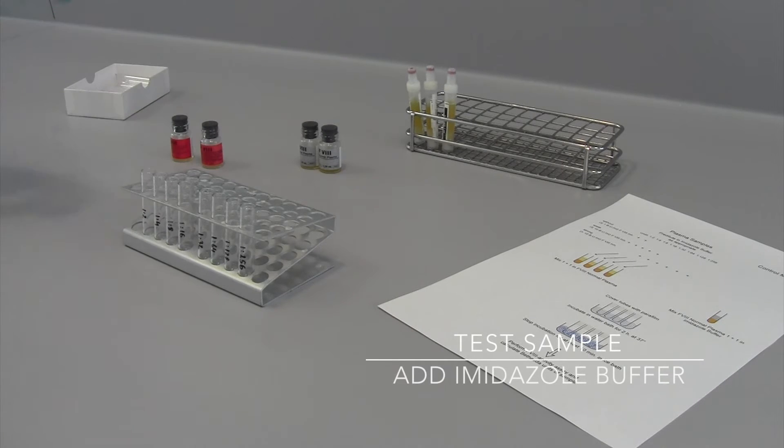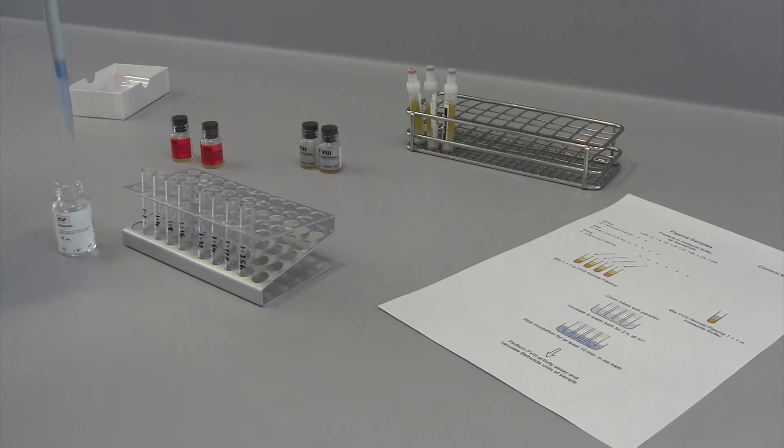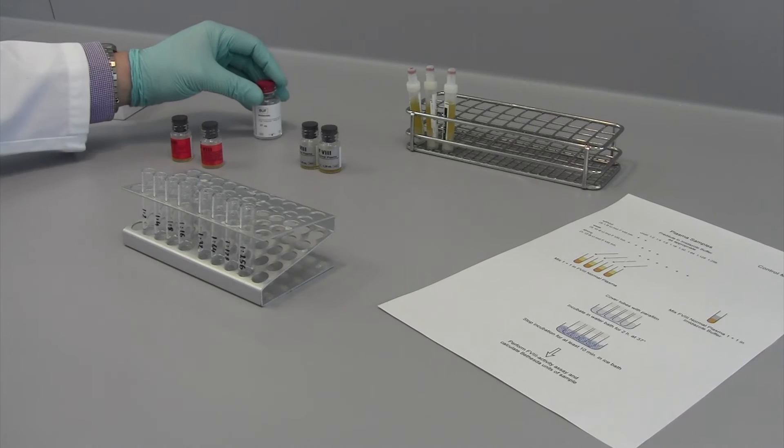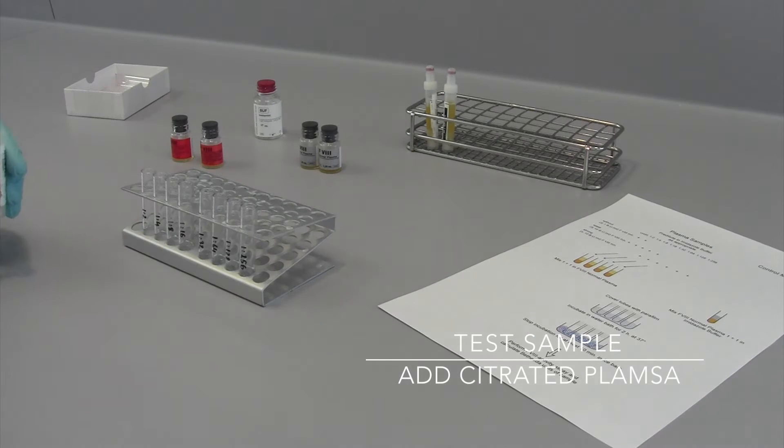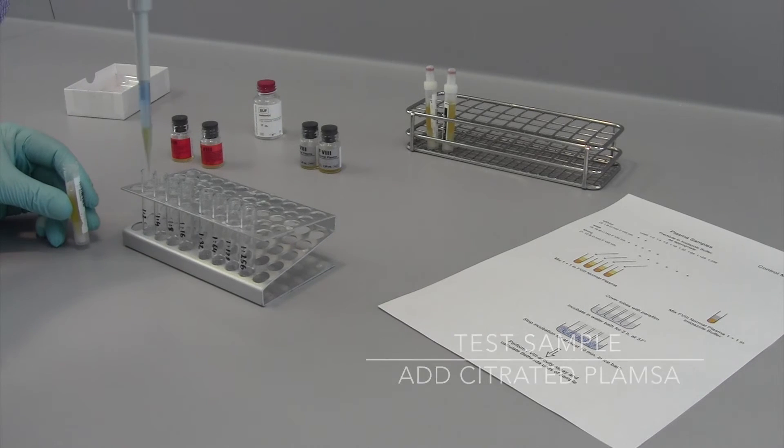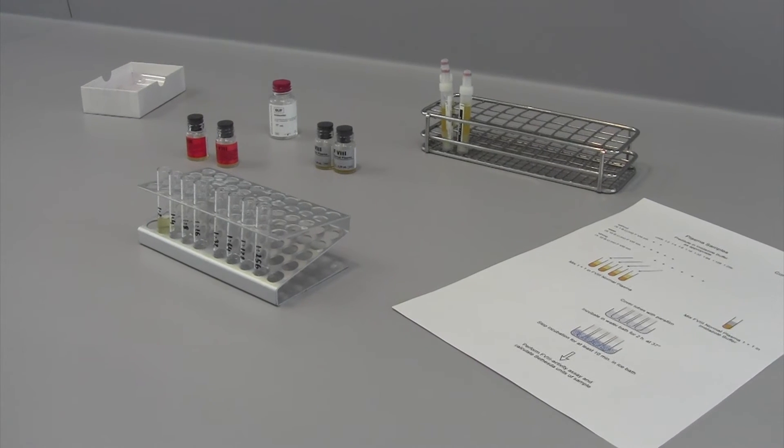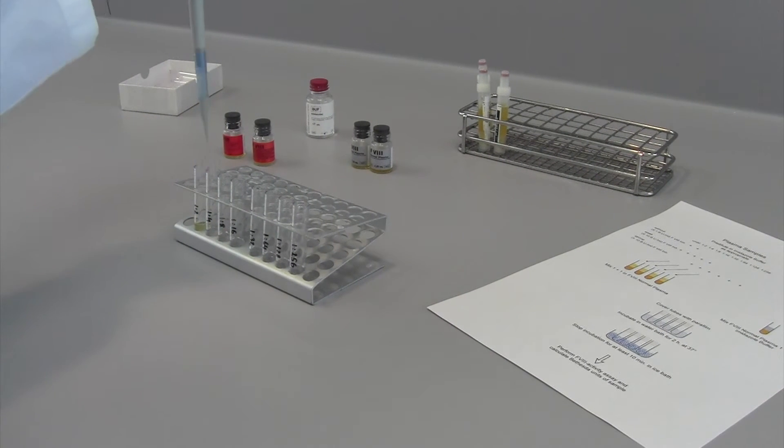Please pre-label the tubes and add 500 microliters of imidazole buffer to each dilution tube. Thereafter, add 500 microliters of sample plasma to the first dilution tube. Continue the dilution by transferring equal volumes from tube to tube. Please ensure adequate mixing.